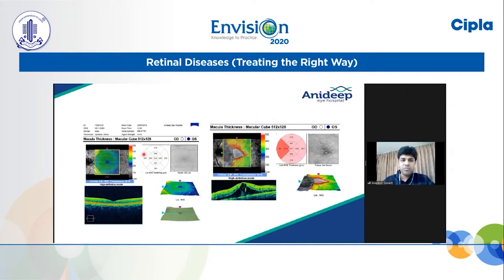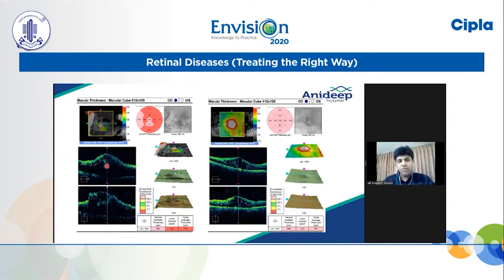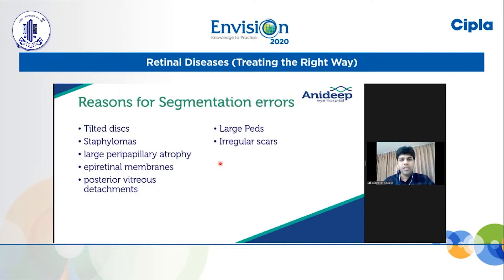There is no color coding because the patient is quite young in age. There can also be a software glitch where most of the area is not imaged. In cases of very high cystoid macular edemas there can be faulty segmentation — you can go in for a manual segmentation. You can see the parafoveal area measuring only 77–68, which we know is not true. When this edema settles down, we get good segmentation and identification of inner and outer borders. Reasons for segmentation error include tilted disc, staphylomas, epiretinal membranes, posterior vitreous detachments, large PEDs, and irregular scars.